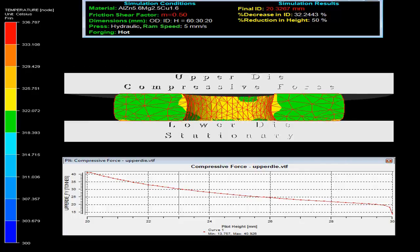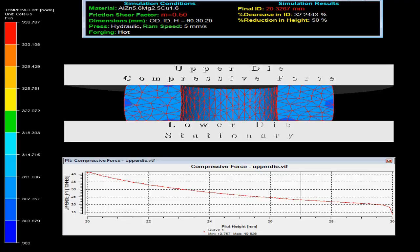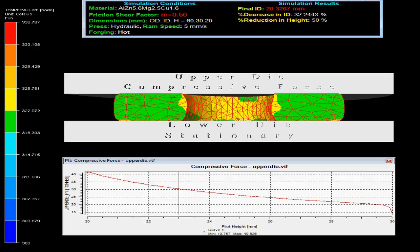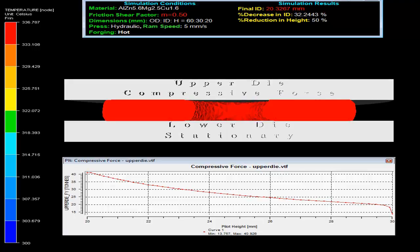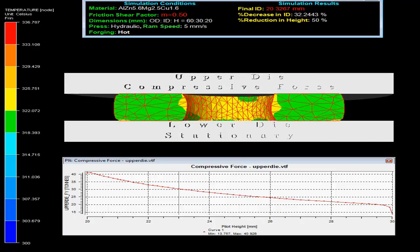Ring compression test has been widely used as a test to evaluate the friction condition in metal forming process. The video shows that a short ring specimen is plastically compressed between two flat dies with lower dies stationary and upper die movable.